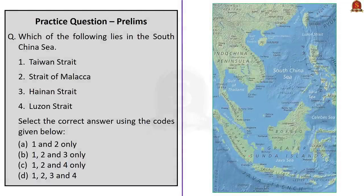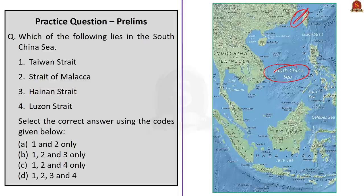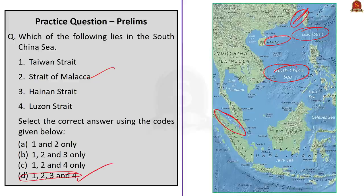Third question is based on the Taiwan Strait, asking which of the following lies in the South China Sea. The options are Taiwan Strait, Strait of Malacca, Hainan Strait, and Luzon Strait. All four are located in the South China Sea region. So the correct answer is all of the above — options 1, 2, 3, and 4.